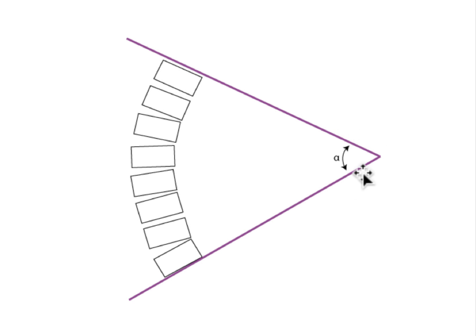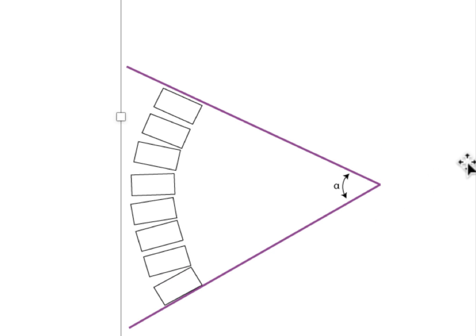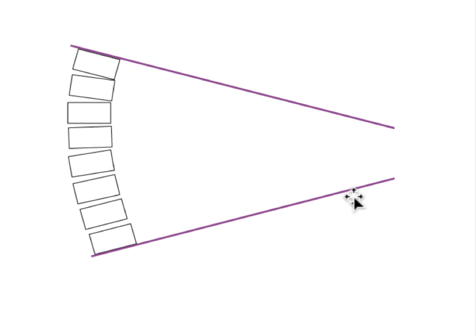This forms the Cobb angle. This is easy to do when the curvature is marked and these lines converge on the paper or screen. But what if the curvature is not so marked? Here, the scoliosis is less marked and these lines are more divergent, and it's easy for these lines to go beyond the paper before they converge.